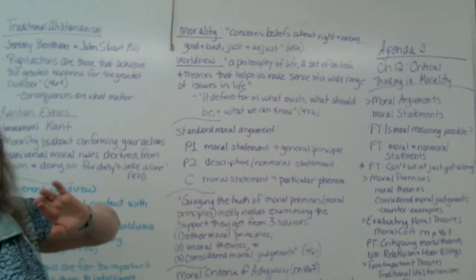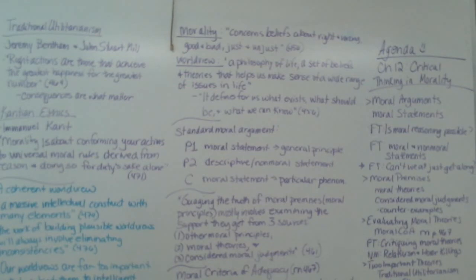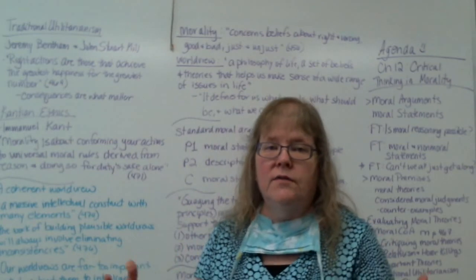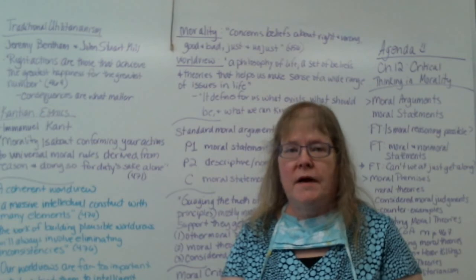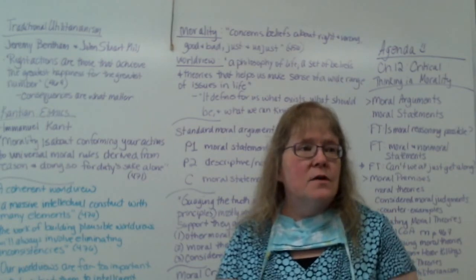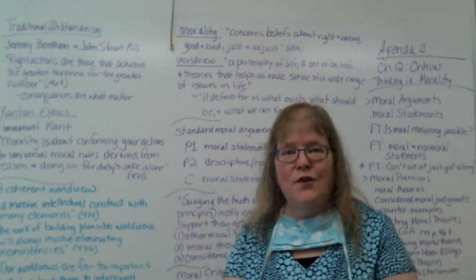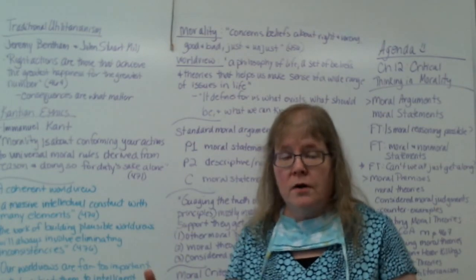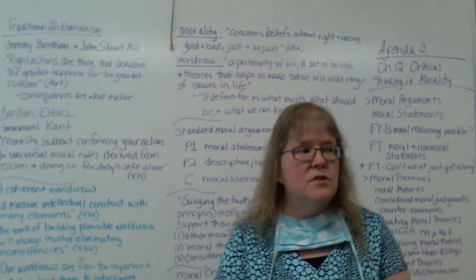The moral criteria of adequacy on page 467: if we're evaluating a moral code, statement, or argument, it has to be consistent with our considered moral judgments — things we already know are true — and consistent with our experience. Our morality is built on compromise whether we want to think that way or not. When we think about how we go about the moral life, we make moral decisions, we disagree about morality with others, and sometimes we act immorally. When we act immorally, we often have to go back, apologize, make restitution and reconciliation, and then try to do better.